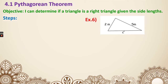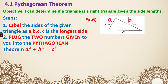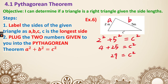Now number six — same idea. First, label A, B, C — C is already labeled; the others are A and B. Step two: plug into the Pythagorean theorem. A is 2 squared, B is 5 squared, which equals C squared. That's 4 plus 25 equals C squared, which is 29 equals C squared. To solve for C, I square root both sides. Typing into the calculator gives C equals 5.39. Don't forget the unit — meter.